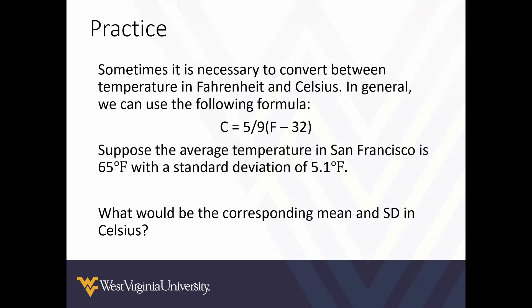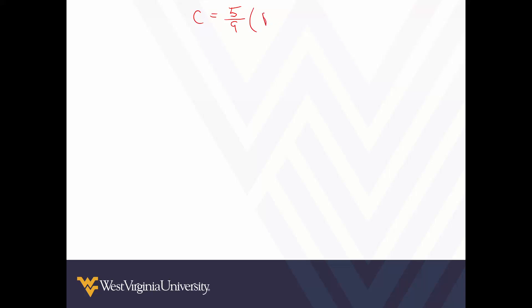Let's look at a practice problem. Sometimes it's necessary to convert temperatures between Fahrenheit and Celsius using the formula: Celsius equals 5/9 times the quantity Fahrenheit minus 32. Suppose the average temperature in San Francisco is 65 degrees Fahrenheit with a standard deviation of 5.1 degrees. What would be the corresponding mean and standard deviation in Celsius?